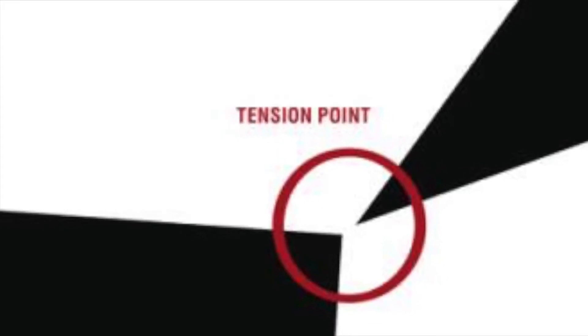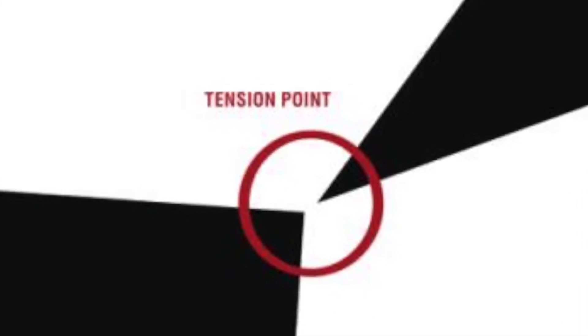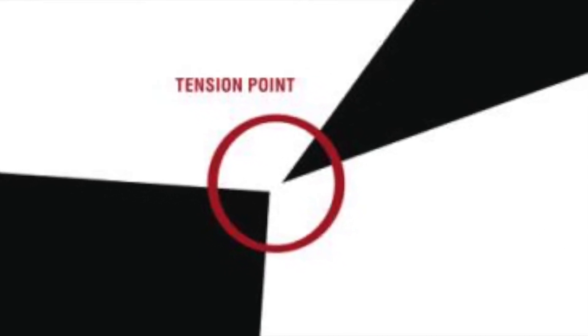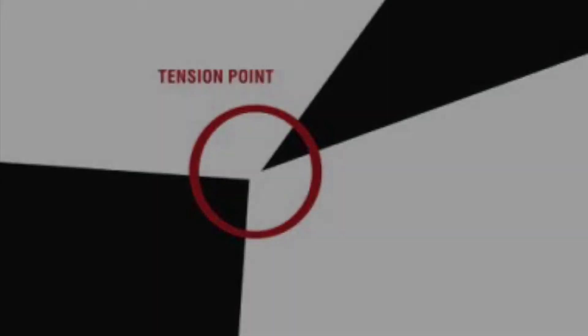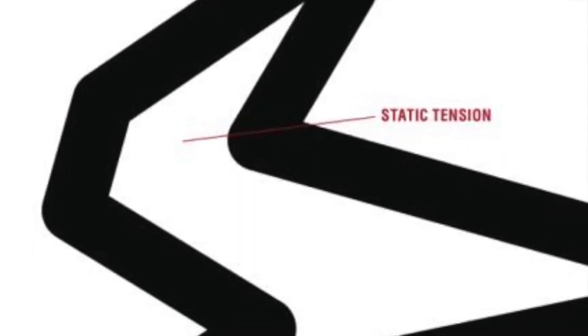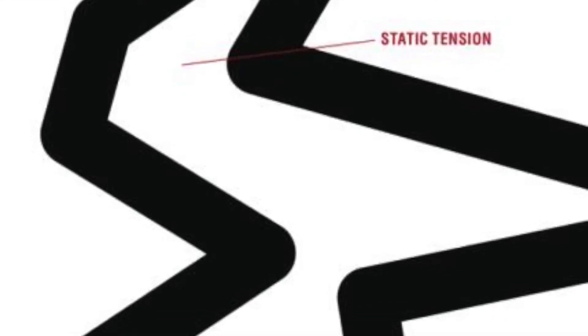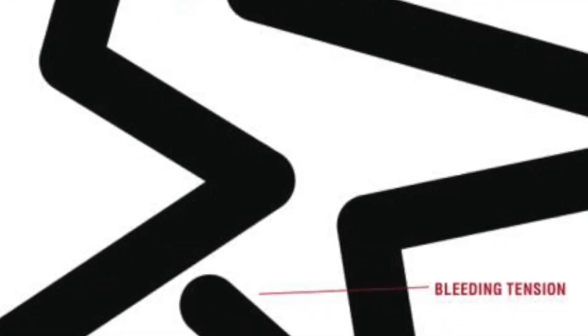Tension is the opposite of harmony. Tension points occur as two elements touch or appear visually to touch in an awkward manner in which they trap the eye, preventing it from the natural flow through the design, breaking the concentration of or shocking the viewer.